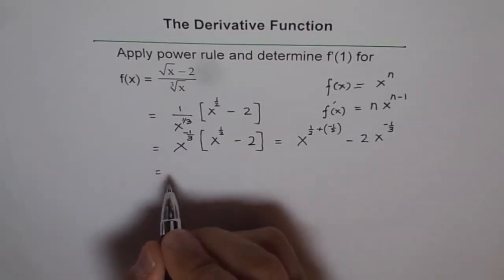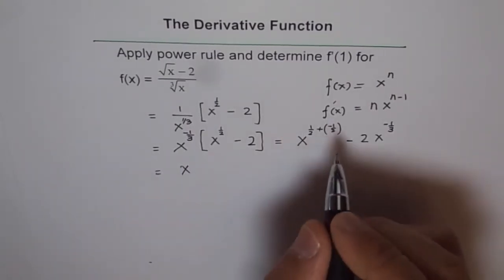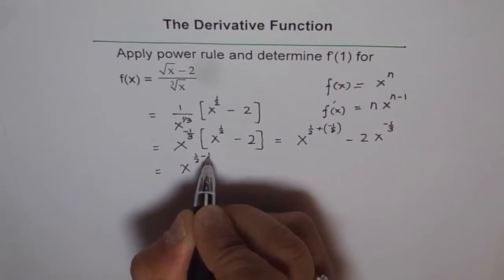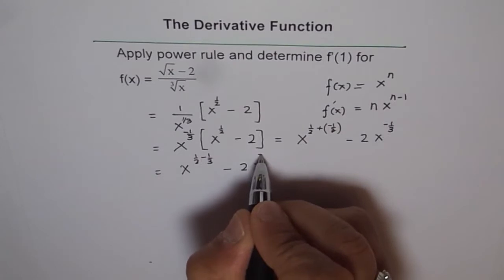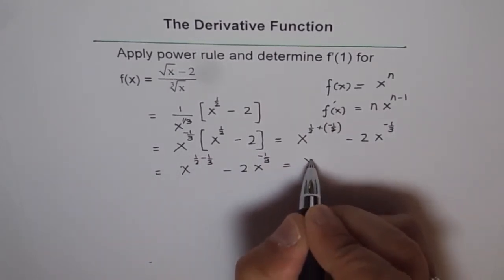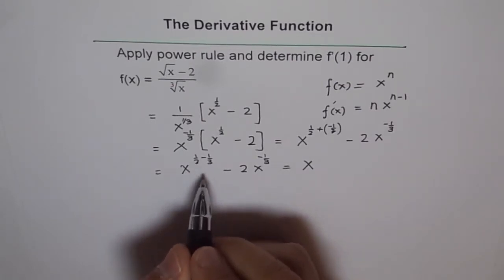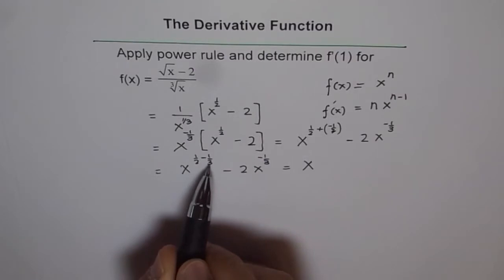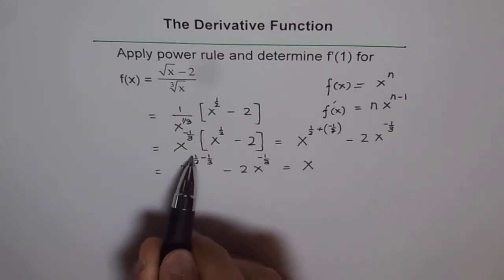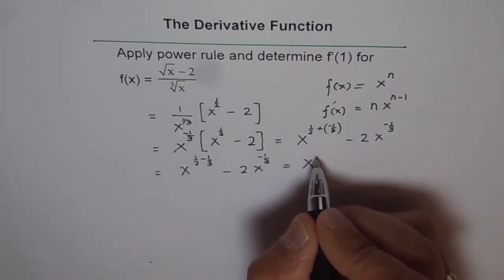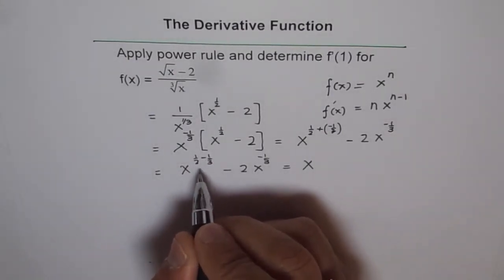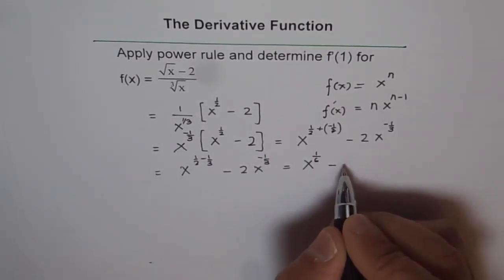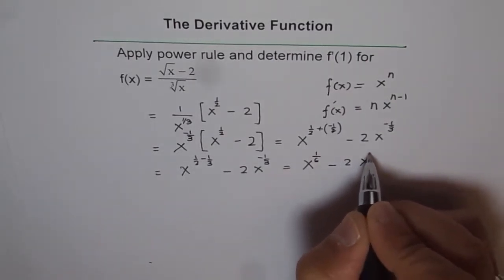Now let's add the exponents. We have 1/2 minus 1/3, so we find a common denominator of 6: 3/6 minus 2/6 equals 1/6. And the second term is minus 2 times x to the power of minus 1/3. So finally, f(x) can be simplified and written as x to the power of 1/6 minus 2 times x to the power of minus 1/3.